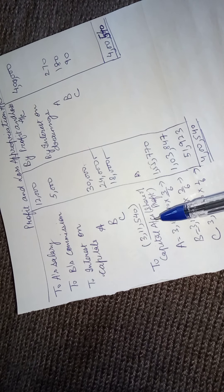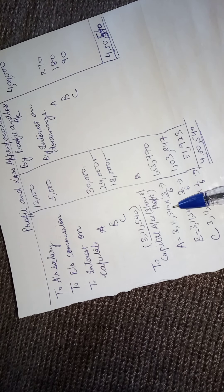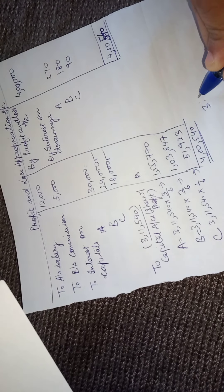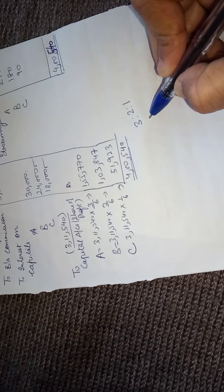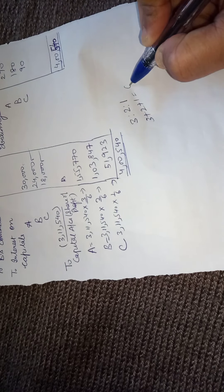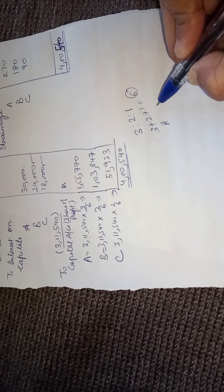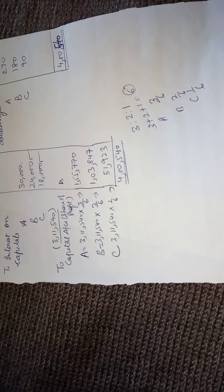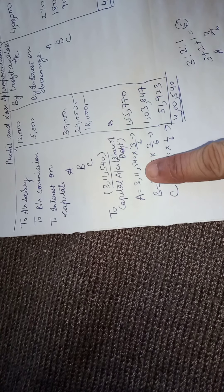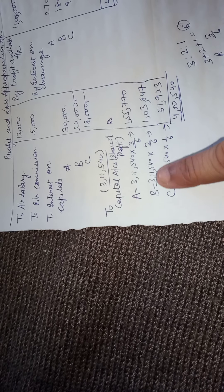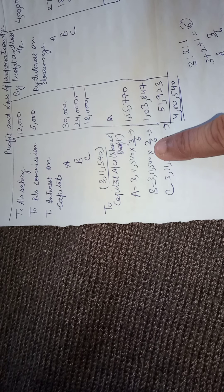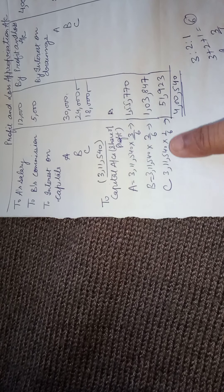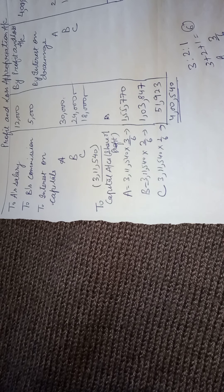This amount is transferred to the capital accounts of the partners. Since the profit sharing ratio was 3:2:1, the total is 3+2+1 = 6 parts. For A: 3,11,540 × 3/6; for B: 3,11,540 × 2/6, which comes to one lakh three thousand eight hundred and forty-seven; and for C: 3,11,540 × 1/6. The total of all three shares equals the same balancing figure on the credit side, confirming the account is balanced.